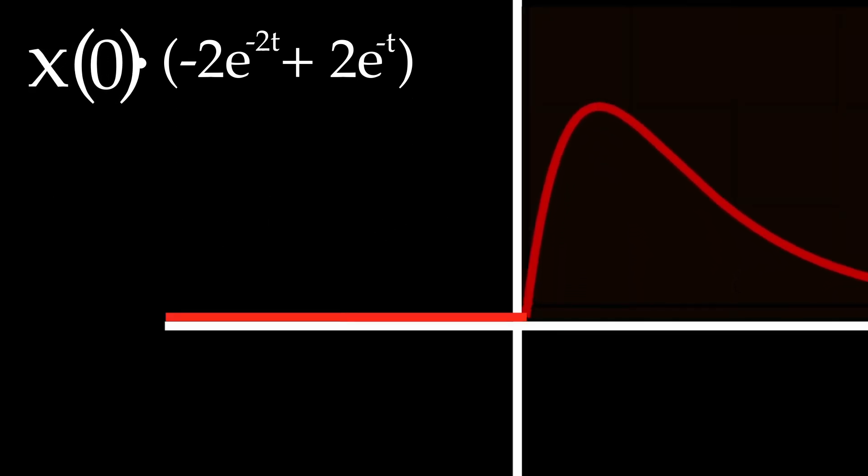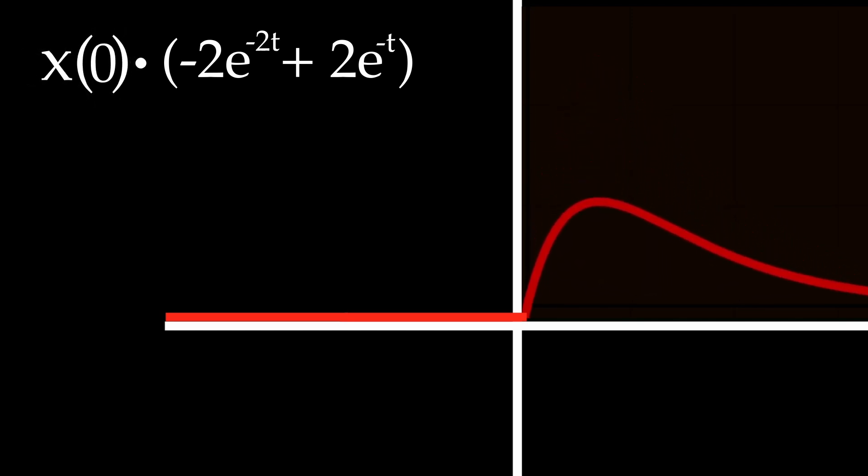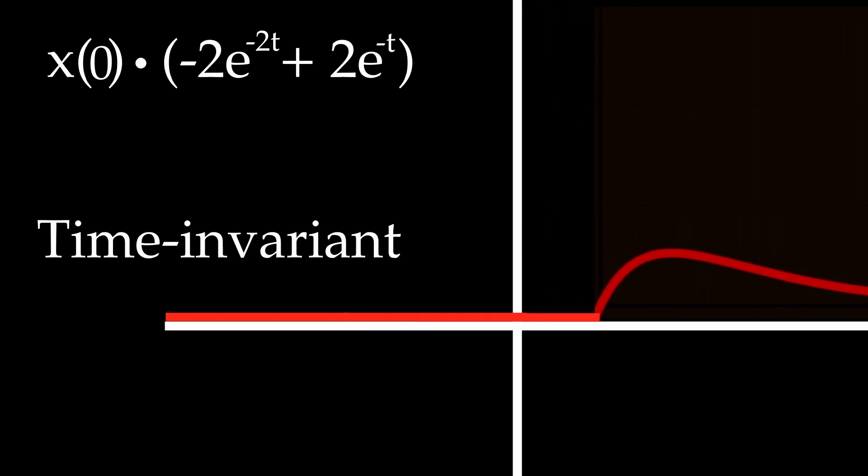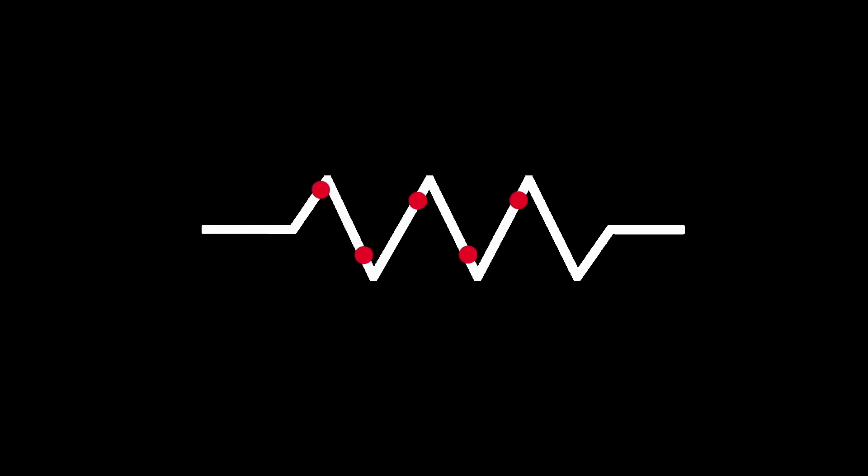For later times, we have to use the fact that our system is time invariant. That means that if we apply our input at a later time, you'll still get the same response, but now later. This makes sense, because after all, why would the resistor care about when you are applying voltage?